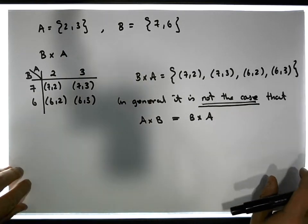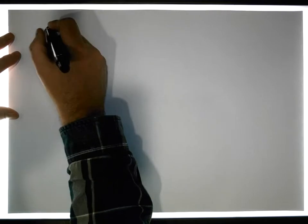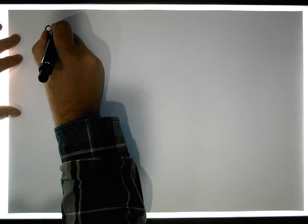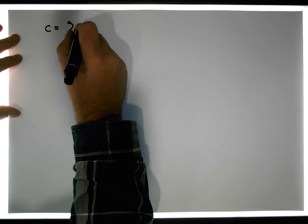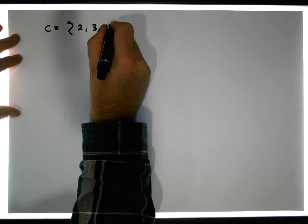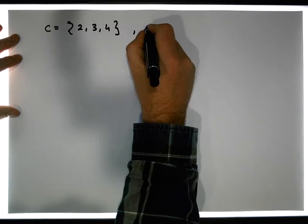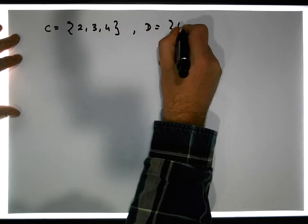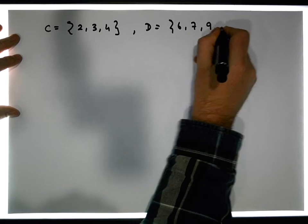And let's consider another set. Let's make it a little bit bigger. Let's say C contains the set, the elements 2, 3, and 4. And let's say that D contains the elements 6, 7, 9, and 5.